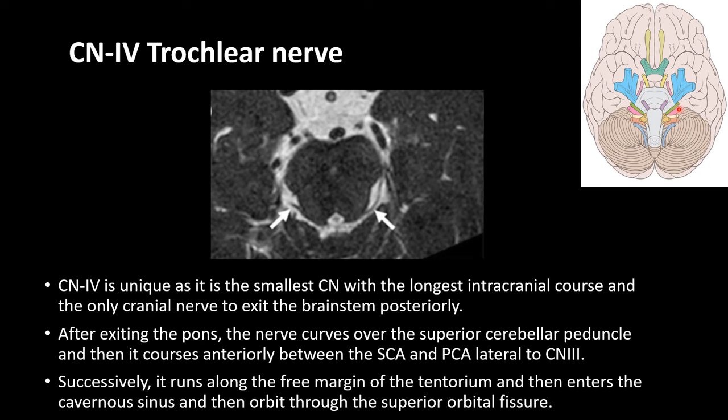The fourth nerve, the trochlear nerve, is unique as it is the smallest cranial nerve with the longest intracranial course and the only cranial nerve to exit the brain stem posteriorly. After exiting the pons, the nerve curves over the superior cerebellar peduncle and then courses anteriorly between the superior cerebellar artery and the posterior cerebellar artery, lateral to the third cranial nerve. It then runs along the free margin of the tentorium, enters the cavernous sinus, and then the orbit through the superior orbital fissure.